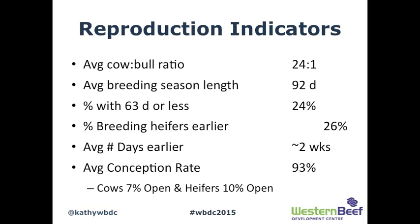Average conception rate was 93% — 7% open on cows and 10% open on heifers. When you think about your own operation, are you doing better than the average, about on par, or is there room to improve? That's what these benchmarks can prove useful for — take them home and look at your own numbers.